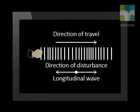The direction of the disturbance and the direction of wave travel are parallel to each other. We call this type of wave, where the direction of disturbance is parallel to the direction of wave travel, a longitudinal wave.